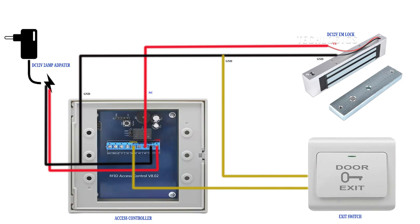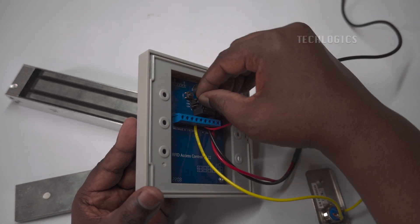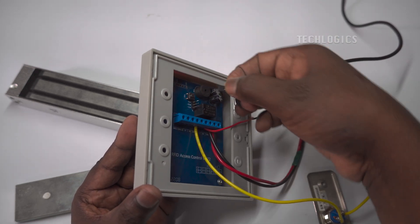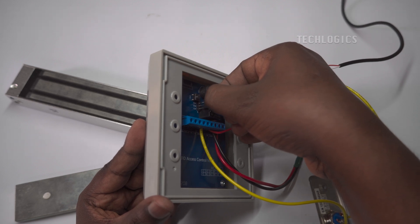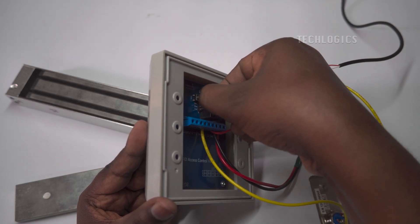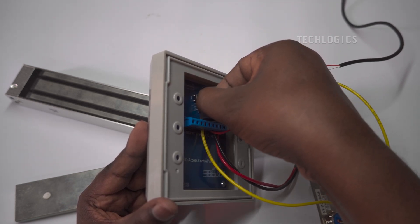If the electromagnetic lock is not working and the power LED is not glowing, you may need to adjust settings on the access controller. To fix this issue, you need to change the jumper cap connector from its current position to connect the plus 12V pin with the COM pin on the access controller, as shown in the video.